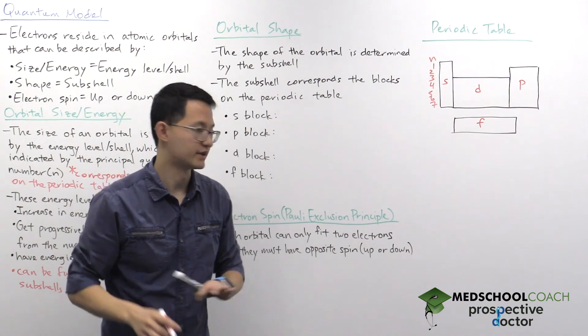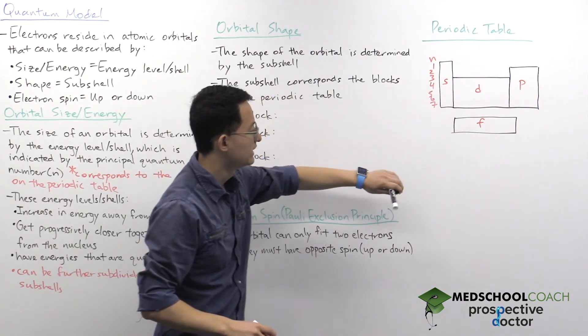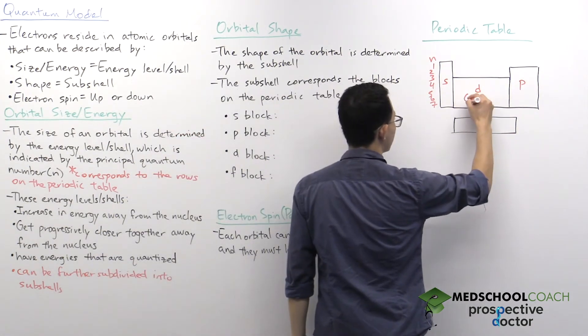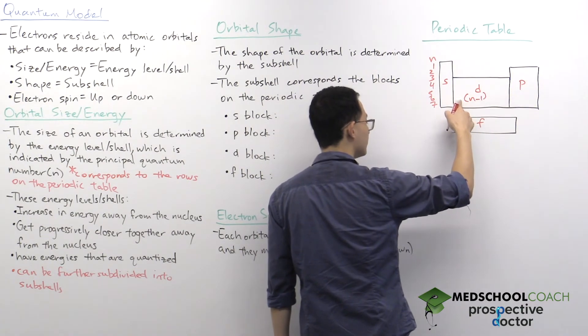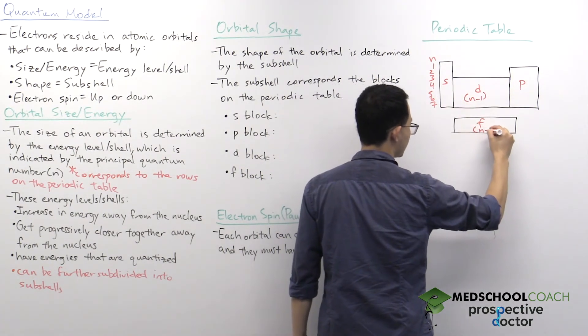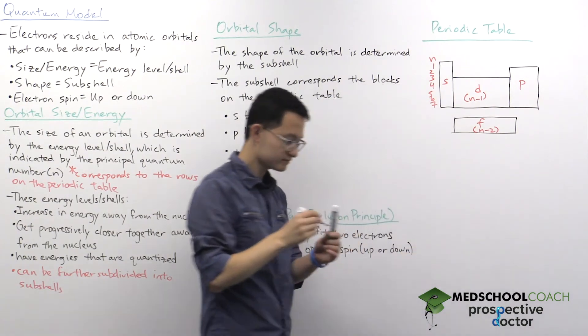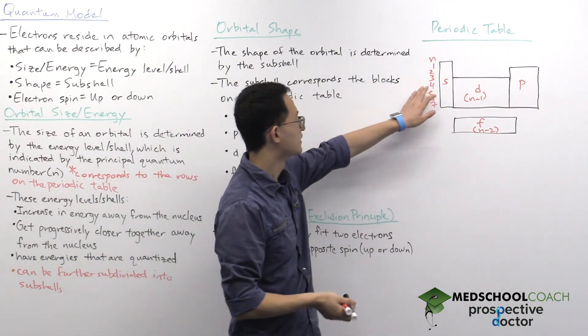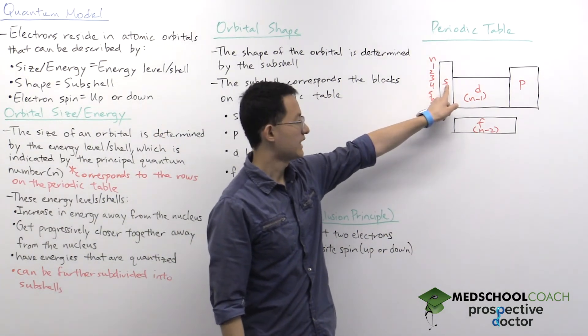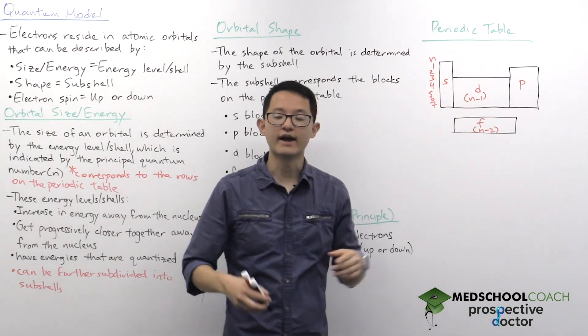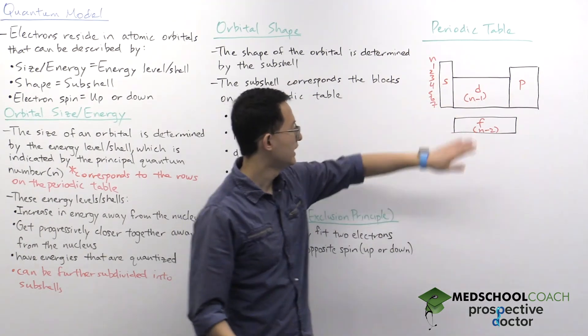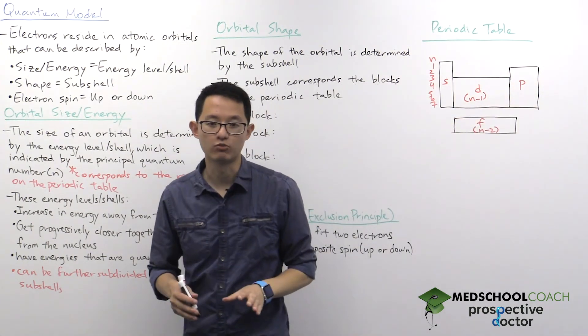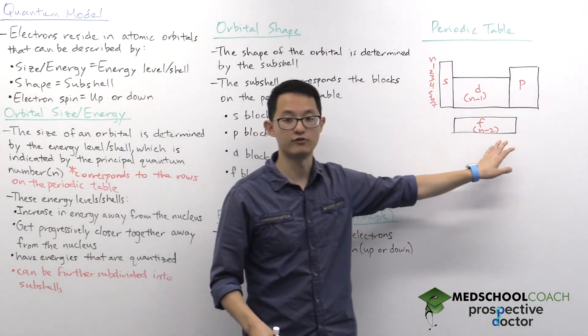This is actually pretty important because for our principal quantum number n, the D block and F block are treated differently. For the D block, you have to subtract one from the principal quantum number, and for the F block, you have to subtract two. For instance, if you look at the fourth row of the periodic table, you start with the 4S subshell. When you move to the D block, you have the 3D subshell, and then you have the 4P subshell. Just make sure you subtract one for the D block and two for the F block.